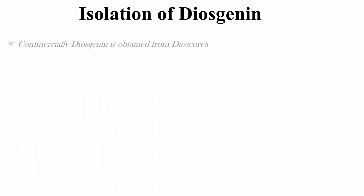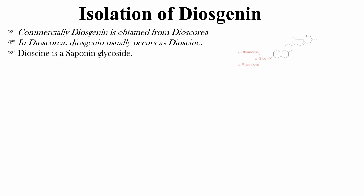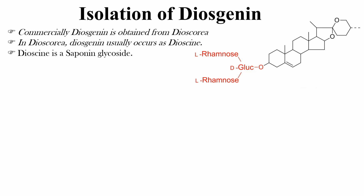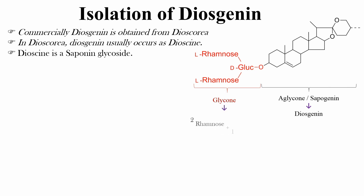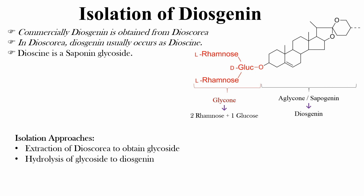Isolation of diosgenin: Commercially, diosgenin is obtained from Dioscorea, where it usually occurs as dioscin. Dioscin is a saponin glycoside containing two parts: glycon and aglycon. The aglycon part is diosgenin and the glycon part consists of two rhamnose sugars and one glucose. Since diosgenin is formed as a glycoside, the isolation approach includes extraction of Dioscorea to obtain the glycoside, hydrolysis of the glycoside to diosgenin, and then isolation and purification of diosgenin.